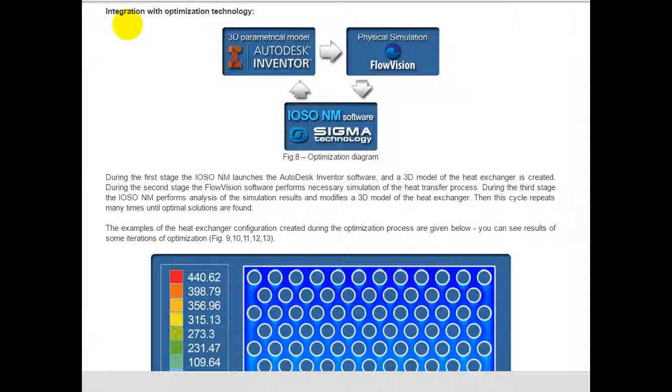Integration with optimization technology: During the first stage, the IOSO software launches Autodesk Inventor and a 3D model of the heat exchanger is created. During the second stage, the FlowVision software performs necessary simulation of the heat transfer process. During the third stage, IOSO performs analysis of the simulation results and modifies the 3D model of the heat exchanger.